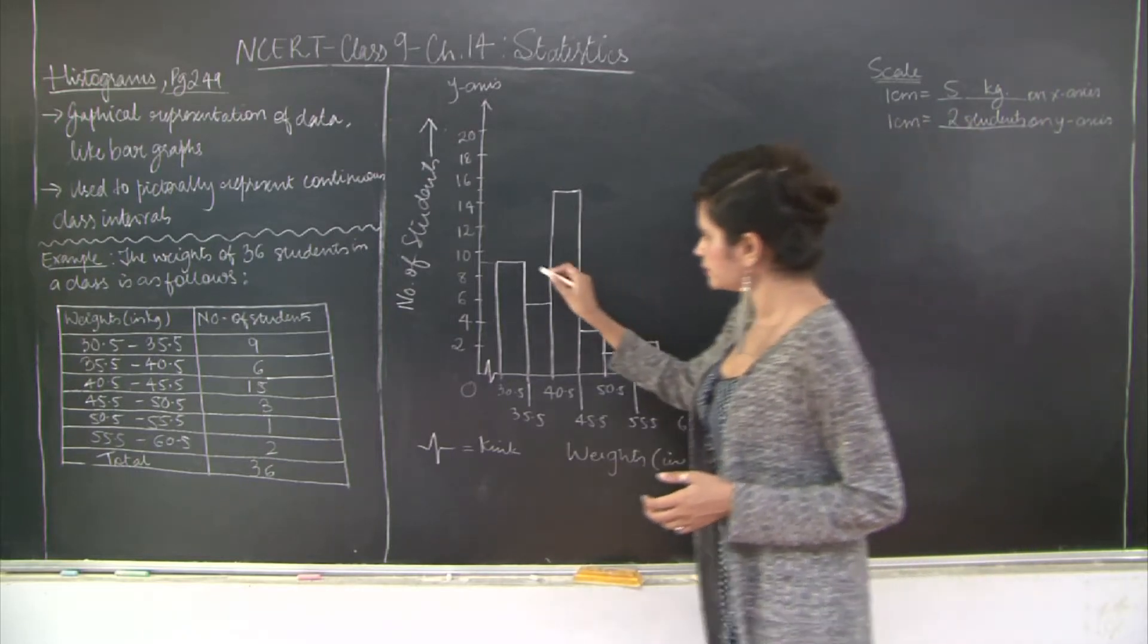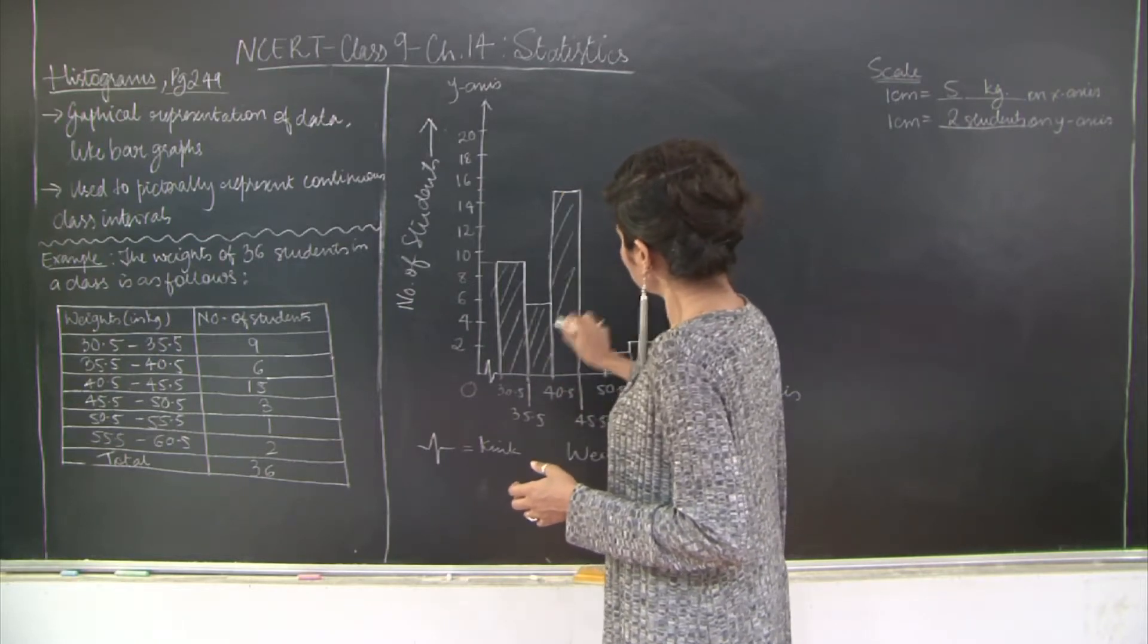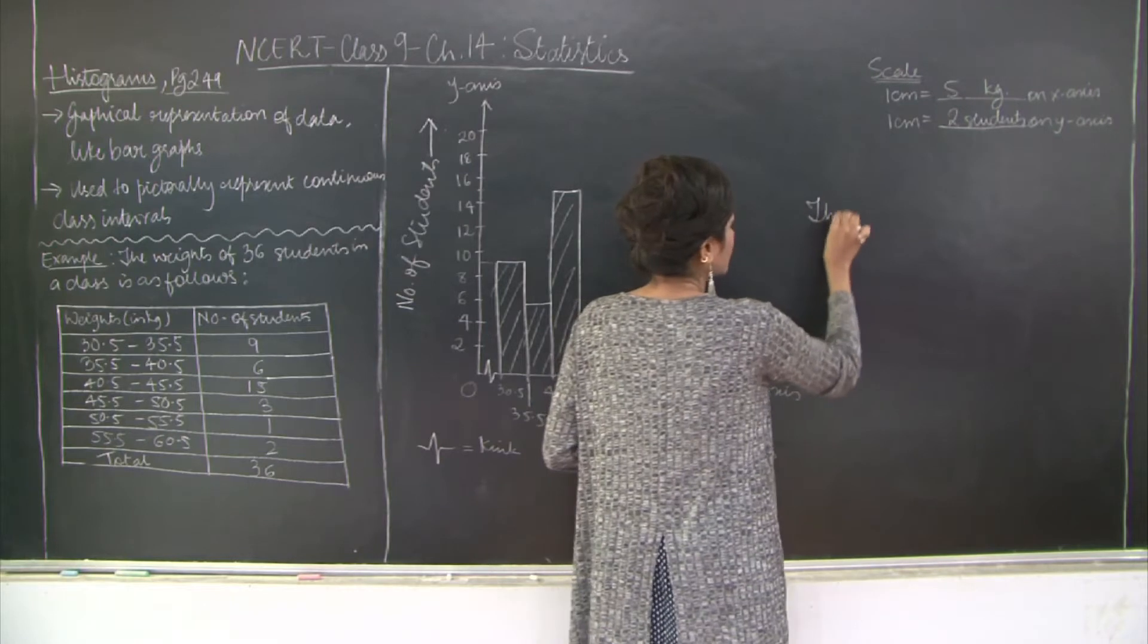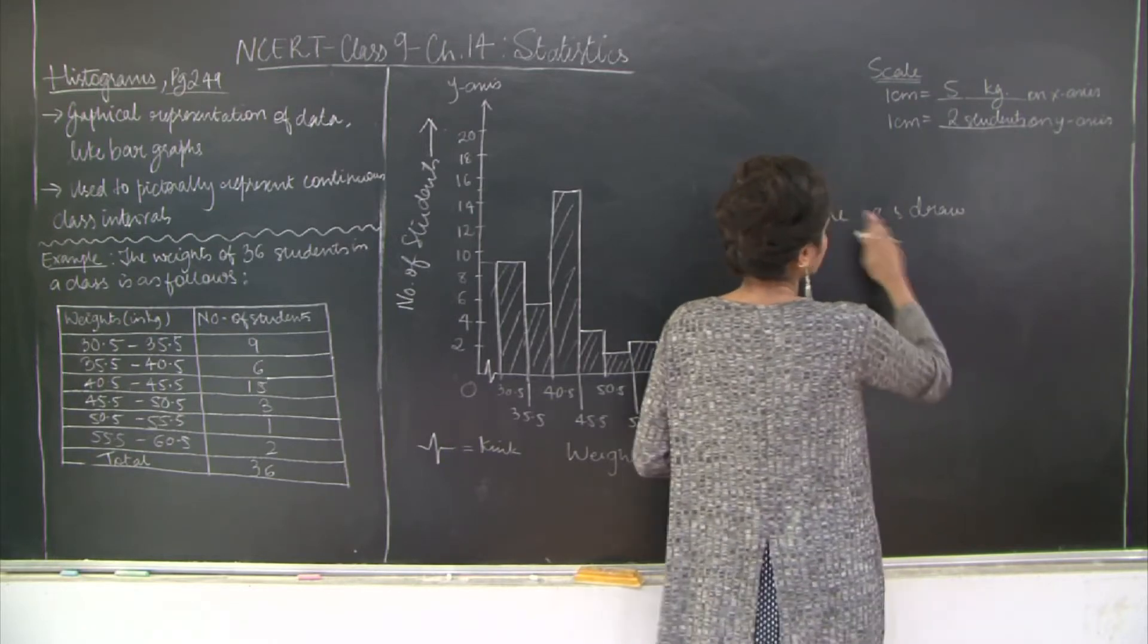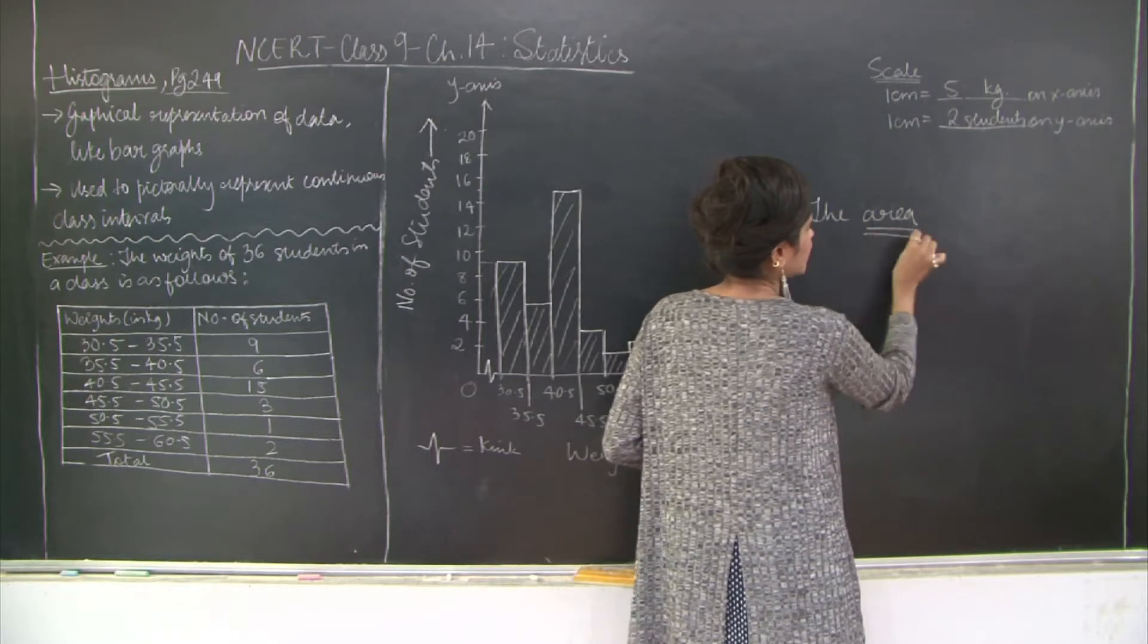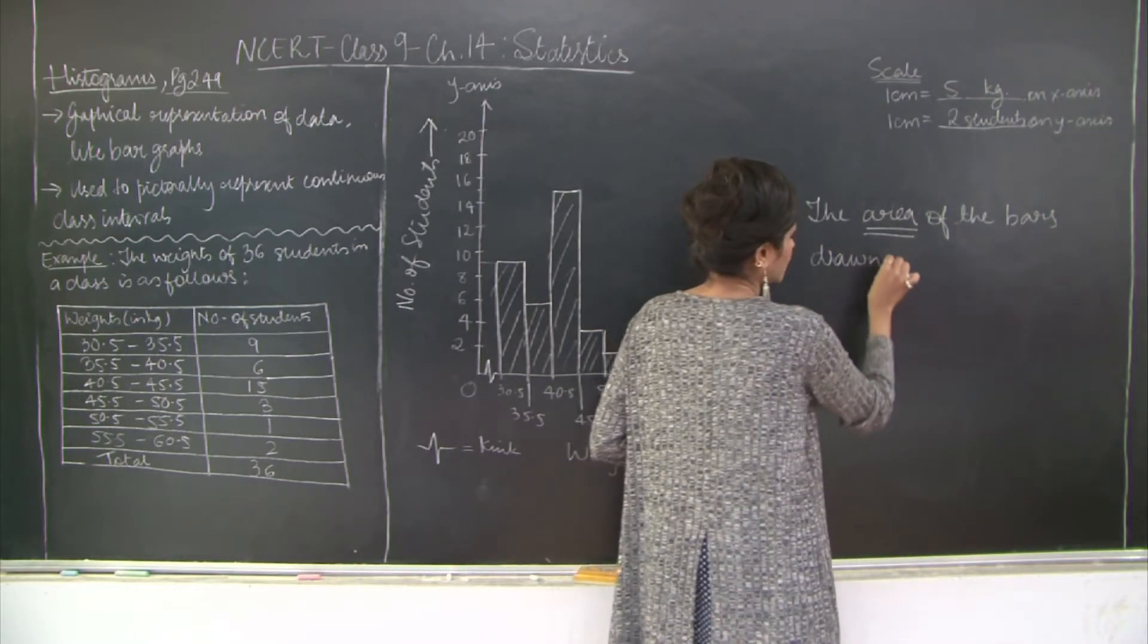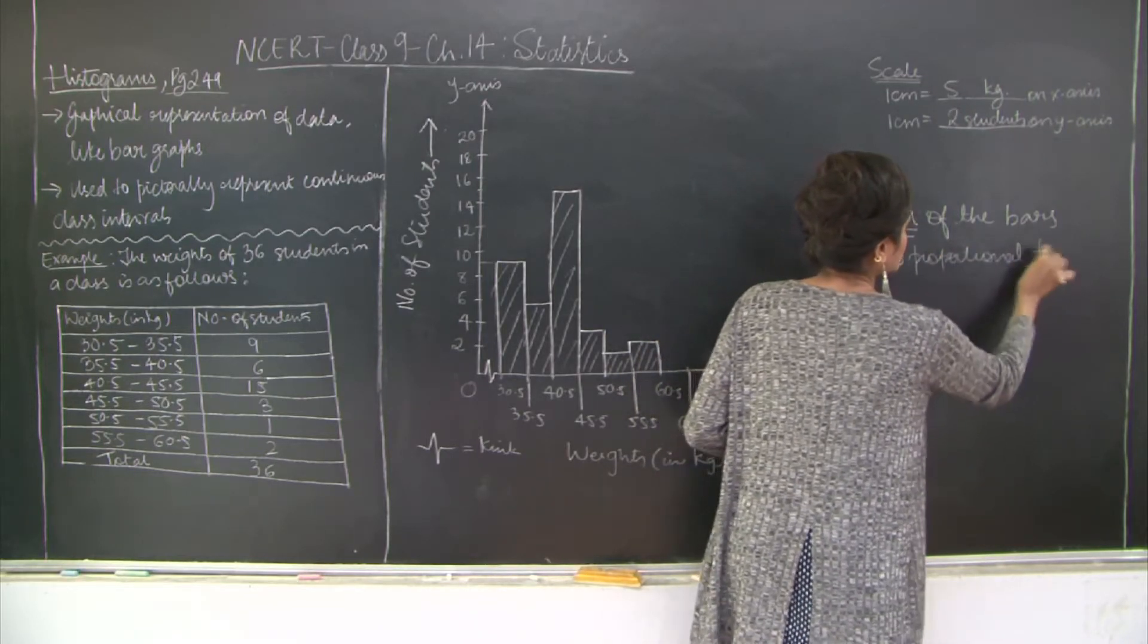What about the y-axis? We are taking two students on y-axis. This is a histogram. You can shade the bars. Please make a note of an important point: the area of the bars drawn is proportional to the frequency.